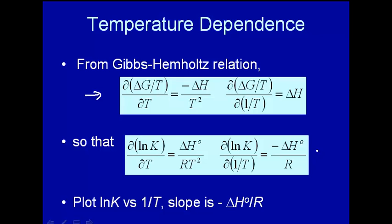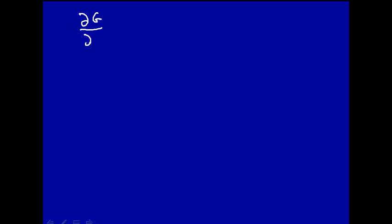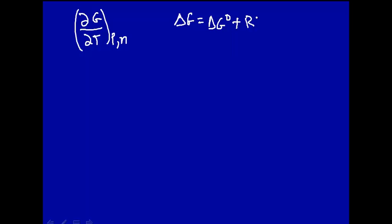Let's figure out the temperature dependence of the Gibbs free energy. What we want is how G changes with temperature at constant pressure and number of moles. Remember that G is a function of three variables: temperature, pressure, and number of moles. What we really want is to relate the equilibrium constant to temperature, because that's something we can measure in the laboratory. Remember that ΔG = ΔG0 + RT ln Q.